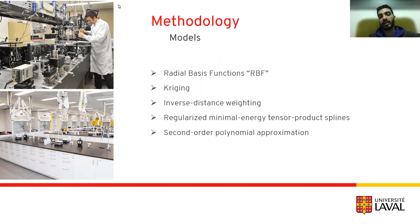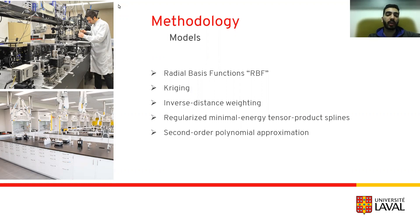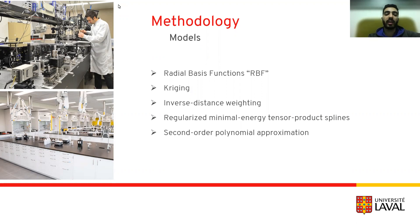The next model is Kriging, which is an interpolating model that is a linear combination of an unknown function added to a realization of a stochastic process. The next one is inverse distance weighting (IDW), which is an interpolating method where unknown points are calculated with a weighted average of the sampling points. The next one is regularized minimal energy tensor product spline (RMTS), which is a type of surrogate model for low-dimensional problems with large datasets where the number of data points exceeds 2,000. The underlying mathematical functions are tensor product splines, which limit RMTS to up to 4D or 5D problems in certain cases.